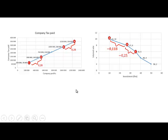Here we have the two diagrams that we looked at in the previous presentations. We have the relationship between company tax paid and company profit, and the diagram showing the relationship between the interest rate level and investment.